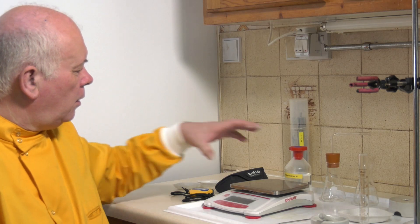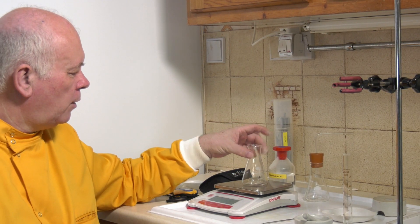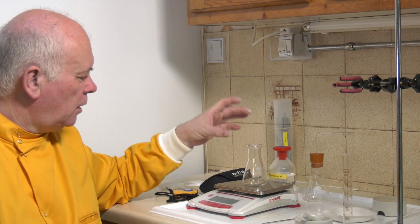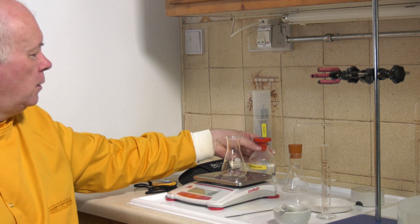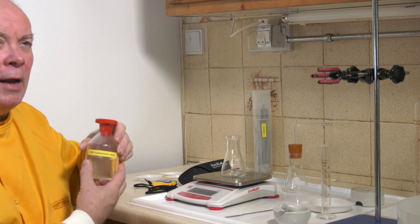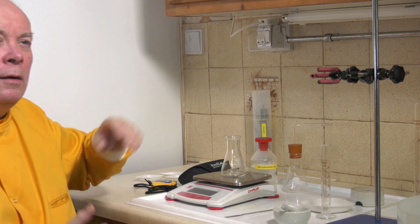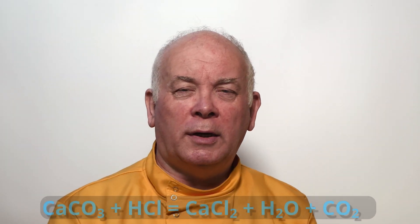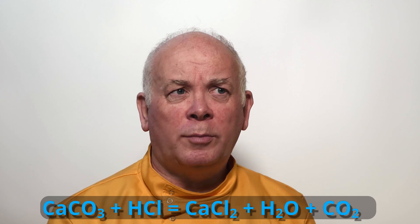We're going to measure the reaction on a balance. We're going to look at the reaction of calcium carbonate. We're going to take some calcium carbonate and react that with hydrochloric acid. Acid plus carbonate gives us a salt plus water plus carbon dioxide.